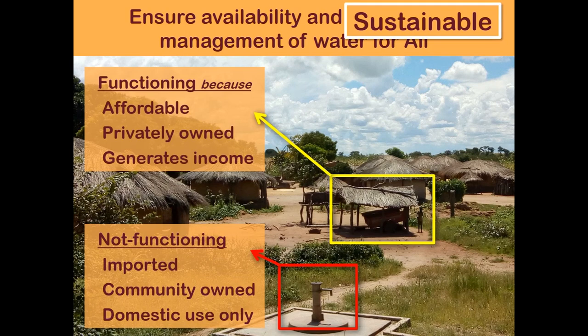The ox cart is functioning because it's affordable. It was made by a local welder using local materials — old car tires, timber, and steel that are available. The ox cart is privately owned, bought by just one family. And that family uses it to bring vegetables to the market every week, so the ox cart is generating income for that family. So what can we learn about functionality from these two settings? I'll come back to that later.